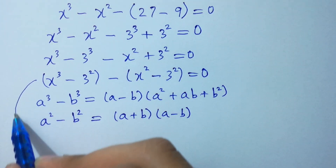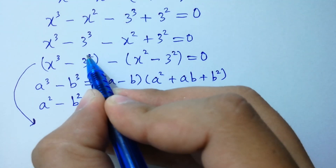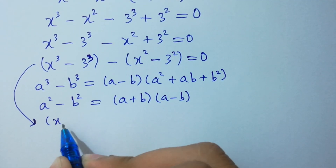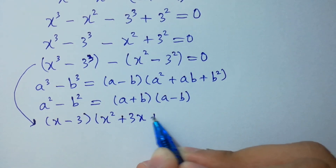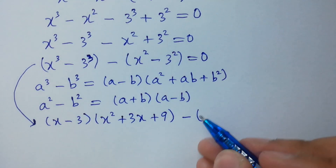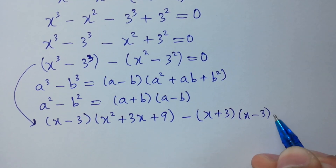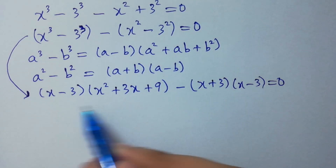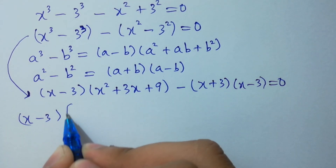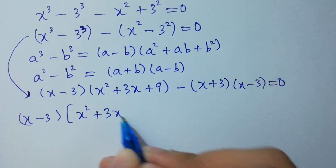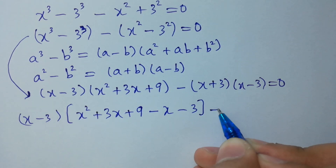So here this equation will change. x cubed minus 3 cubed gives (x minus 3)(x squared plus 3x plus 9), minus x squared minus 3 squared gives (x plus 3)(x minus 3), equals 0.